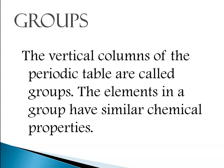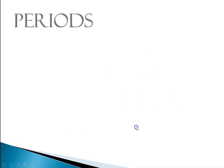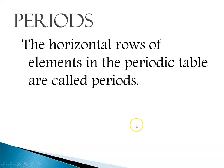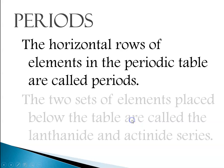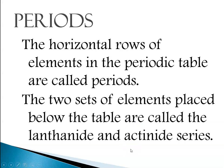The periodic table is organized according to two things: groups and periods. Groups are the vertical columns on the periodic table — they are sometimes called families — and the elements in a group are there because they have similar chemical properties. Periods are the horizontal rows of elements in the periodic table, and they go one through seven. There are also two sets of elements placed below the table, and those are called the lanthanide and actinide series.